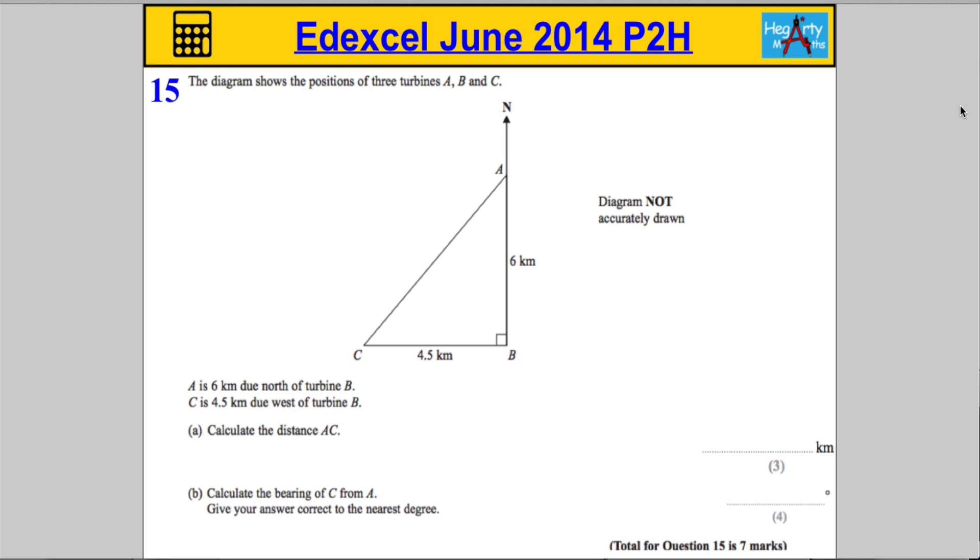Question 15. The diagram shows the positions of three turbines, A, B, and C. It says that A is 6 kilometres north of B, and C is 4.5 kilometres west of B. Calculate the distance AC.